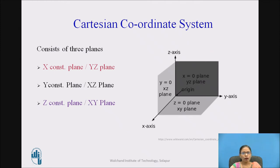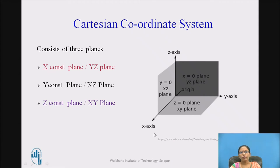Now, what is the Cartesian coordinate system? The Cartesian coordinate system, also called the rectangular coordinate system, consists of three planes: one is the x-constant plane — also called the yz plane, since when x is constant the varying two coordinates are y and z. The y-constant plane is the xz plane, and the z-constant plane is the xy plane.